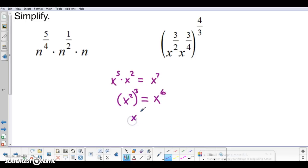Other properties we had, if we had the quotient of powers property, or if I had x to the fifth over x squared, let's say, I would subtract those exponents, thinking about canceling. So in that case, that would be x cubed.